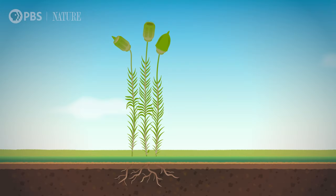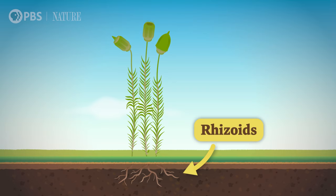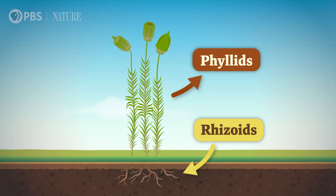We have the development of land plants to thank for all the land animals that exist, including humans. But in order for bryophytes to survive on land, they needed to evolve ways to stay hydrated in the dry air. So they developed root-like structures called rhizoids and leaf-like structures called phyllids, which bryophytes still have today. Unlike true roots, rhizoids' primary purpose is to anchor bryophytes to surfaces — they don't absorb much water. So moist surfaces are prime real estate for bryophytes, clinging to the ground, rocks, and larger plants to absorb water and nutrients directly through their phyllids.